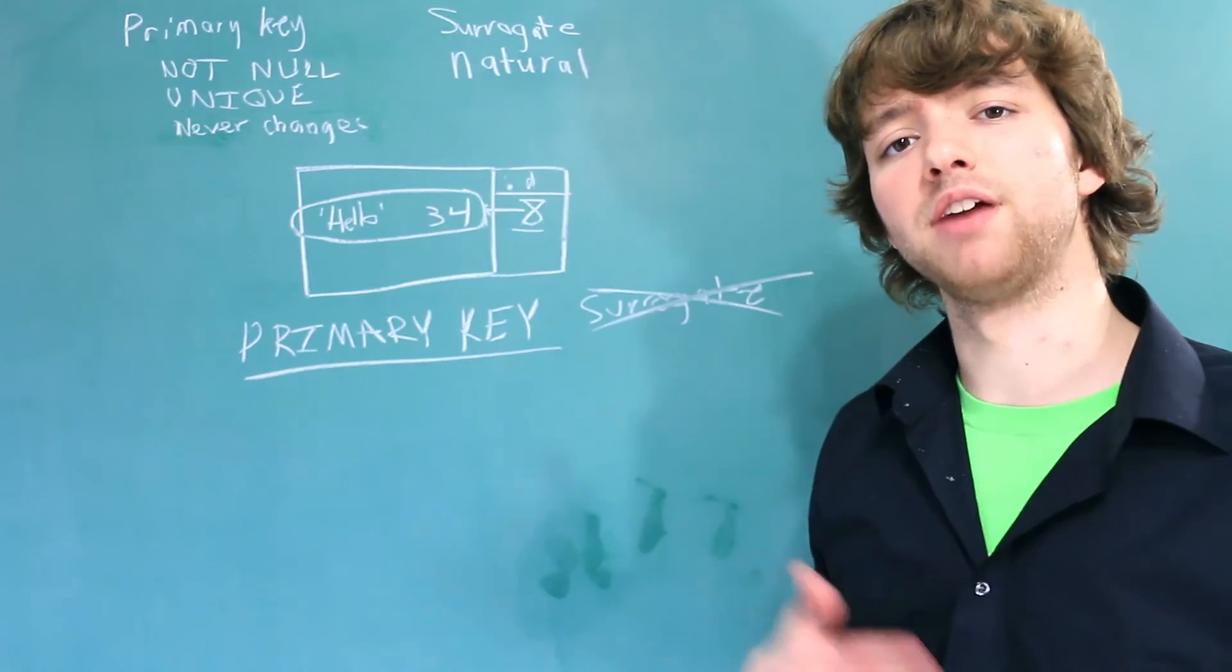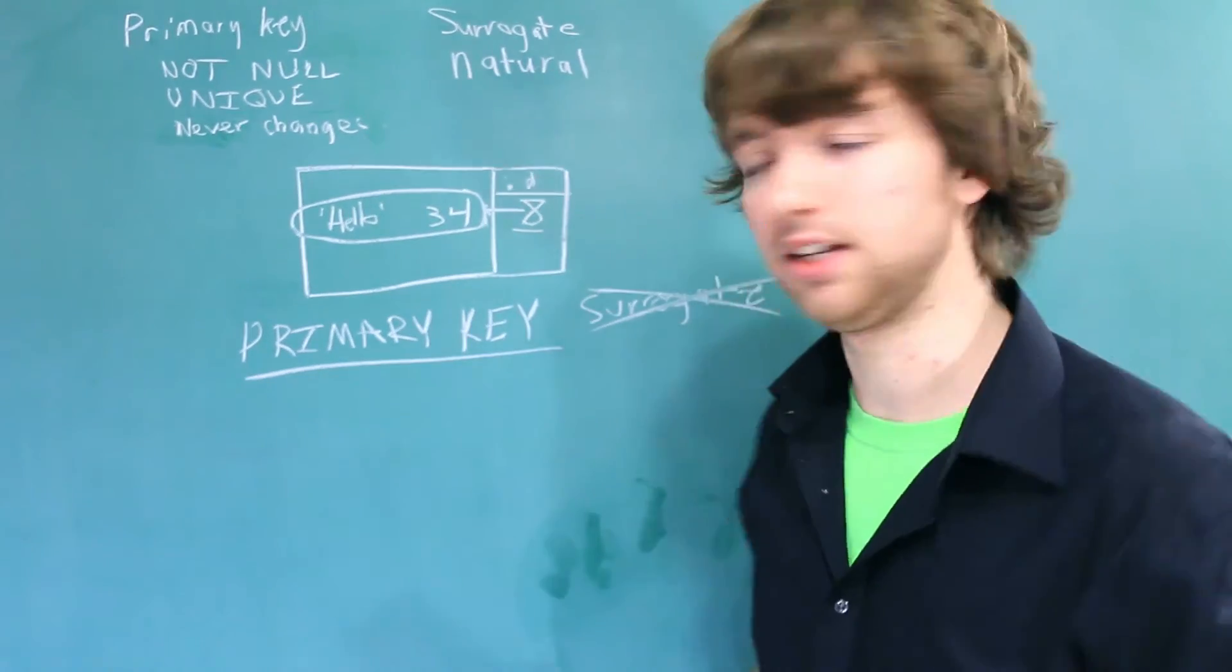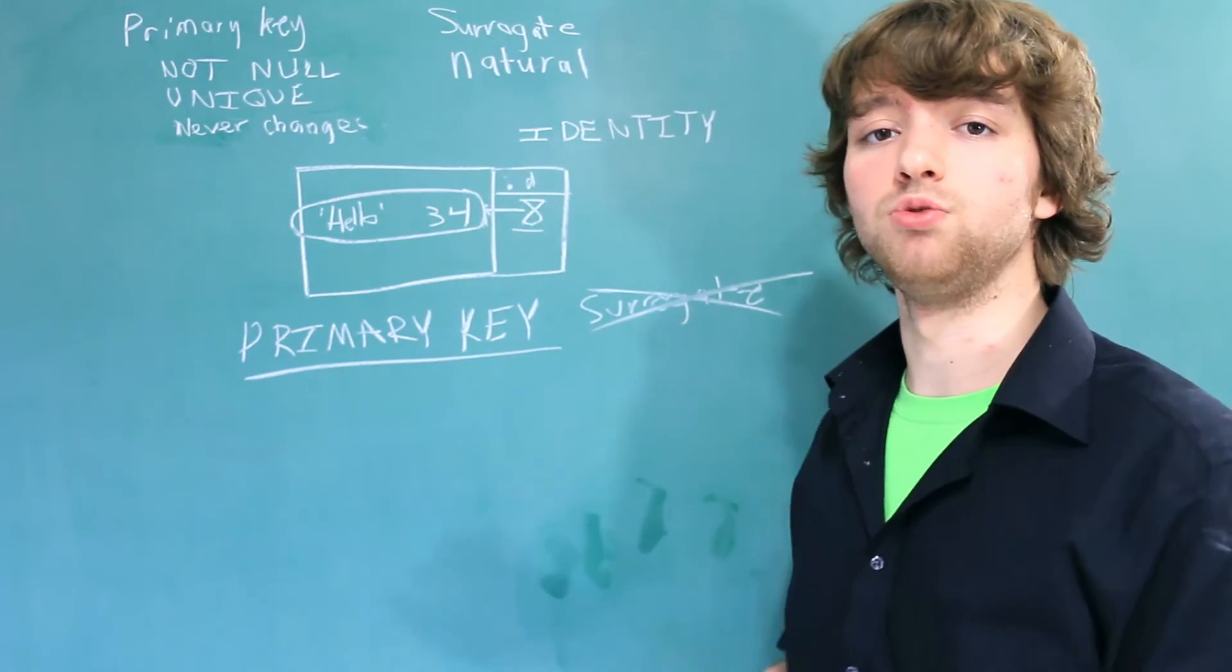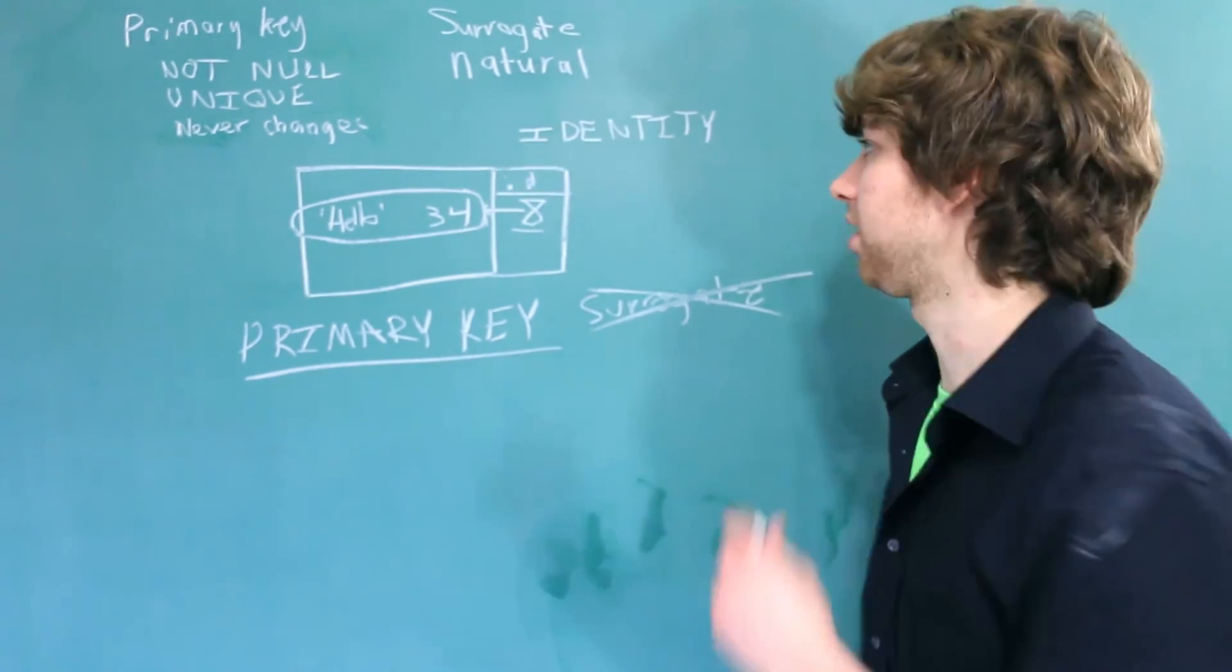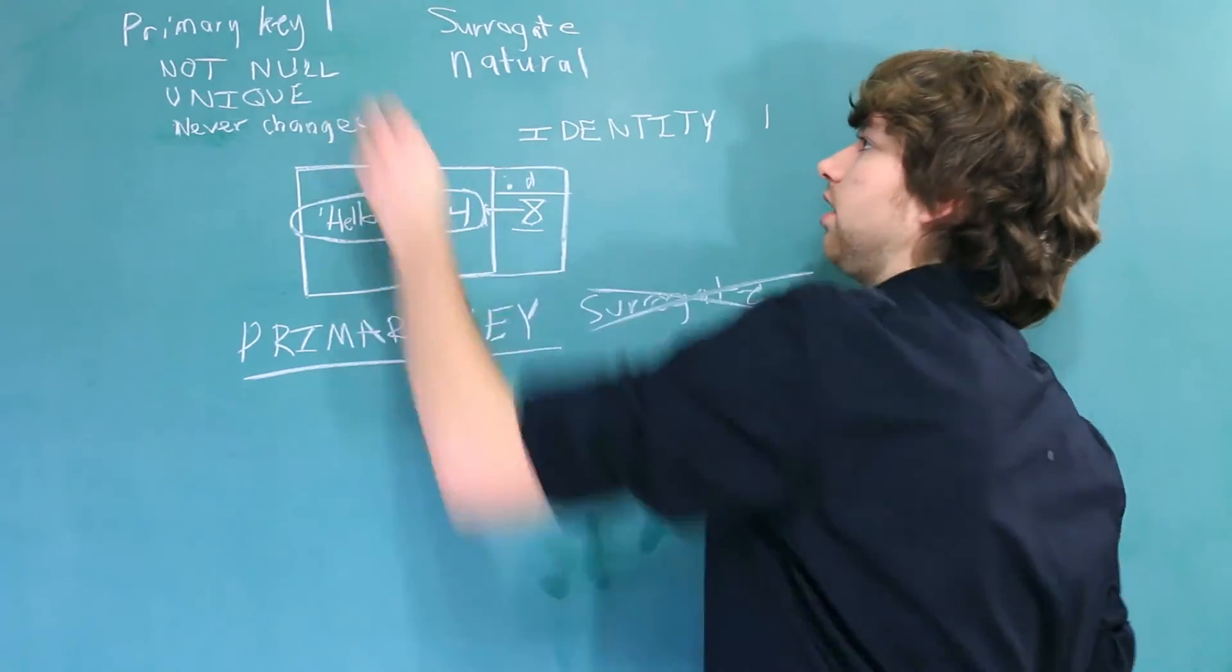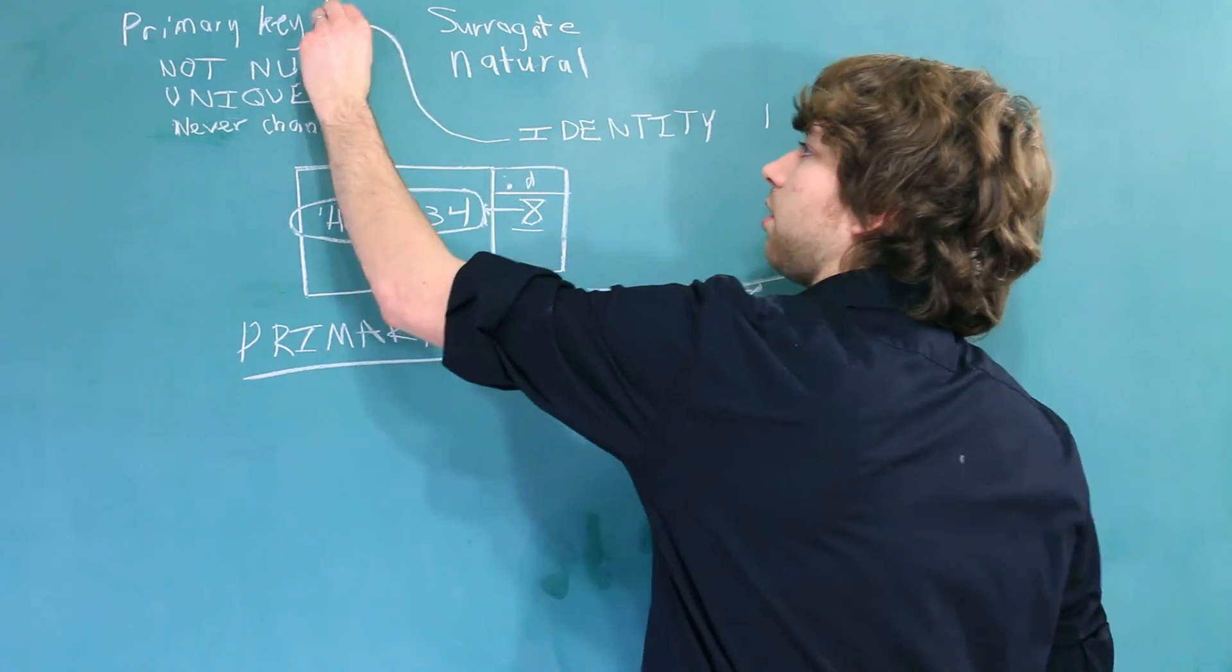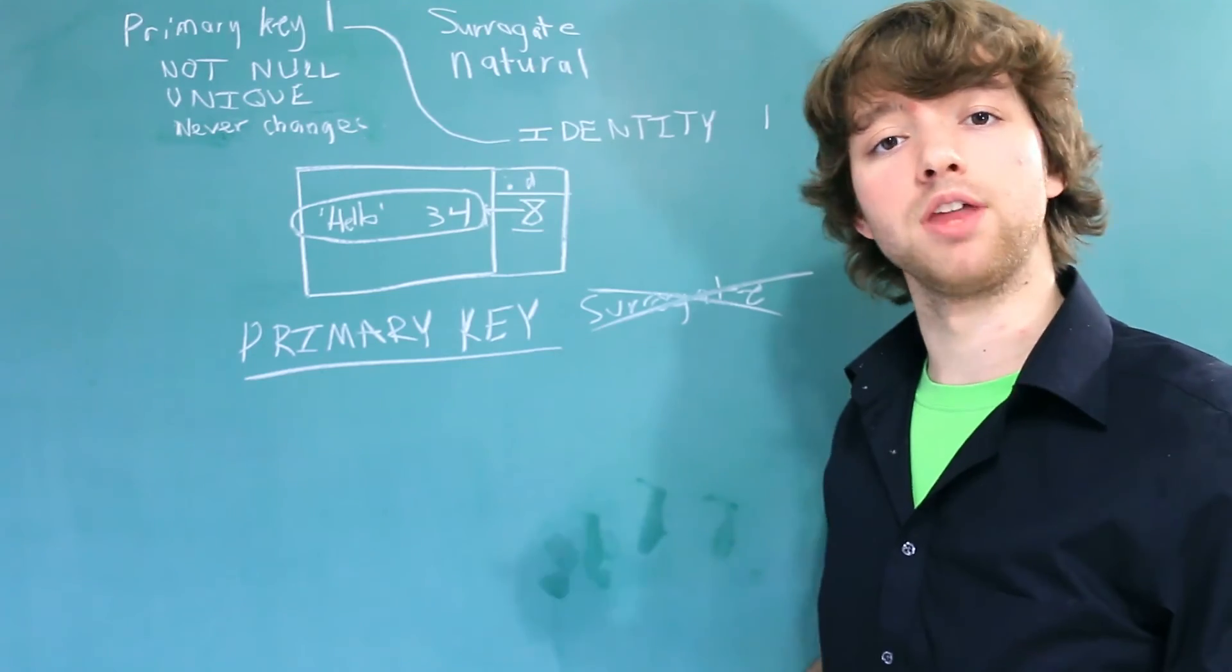Now the way we protect the data from never changing is we use what's known as an identity. An identity column is a column that automatically gives you a new number every time you insert a new row. Each table can have up to one identity. Also a table can only have one primary key. Because of that, it often makes sense that the identity column is also the column labeled as primary key. It does not have to be that way though.